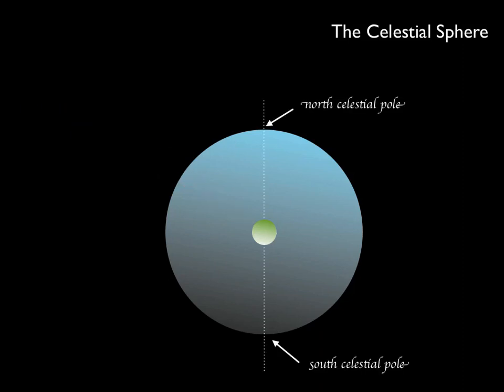Also projected upon the celestial sphere, this time from the inside, are the Earth's poles and the Earth's equator, which become known as the north and south celestial pole and the celestial equator.